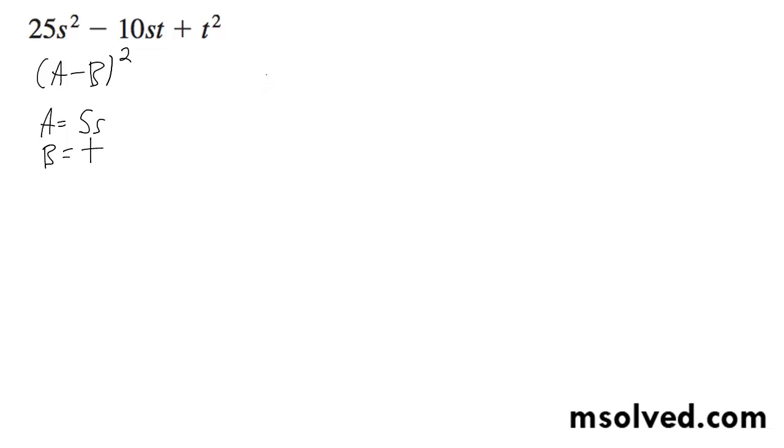So what we're going to have here is simply, well I'm going to rearrange it so it's t squared minus 10st plus 5s squared. And then it will be easier to see.